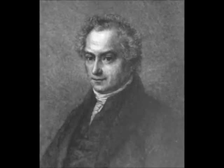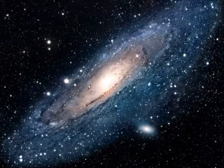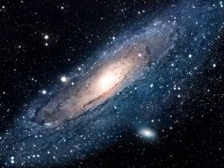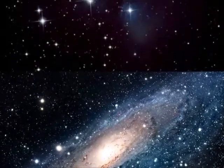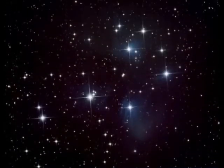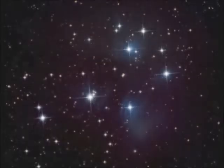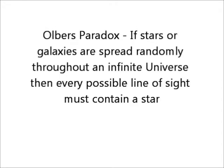In the 1820s, an astronomer called Olbers noticed a big problem with this model of the universe. If stars or galaxies are spread randomly throughout an infinite universe, then every possible line of sight must contain a star. Calculations show that this would make the whole night sky uniformly bright. This problem is called Olbers' Paradox, and clearly there's a contradiction between an infinite and a static universe.